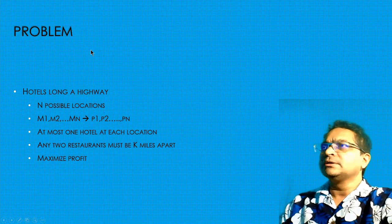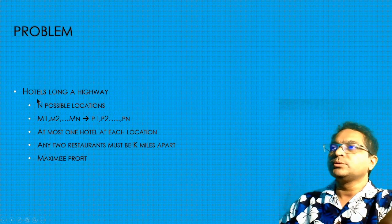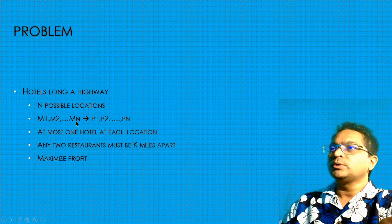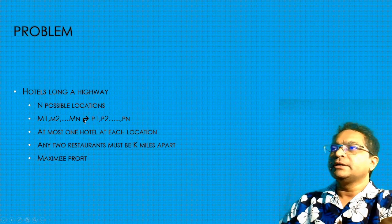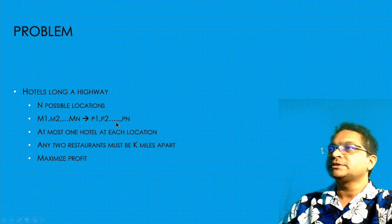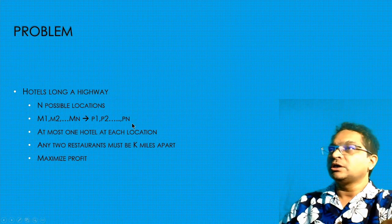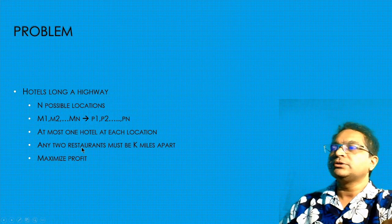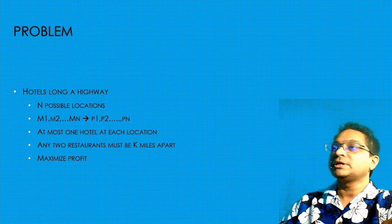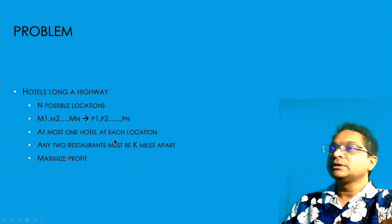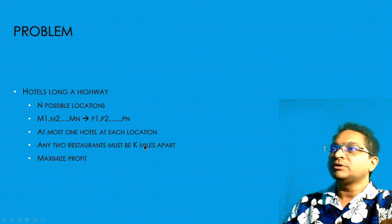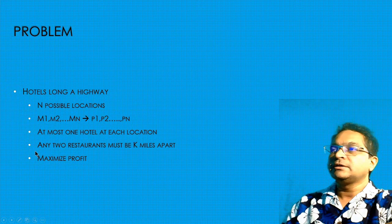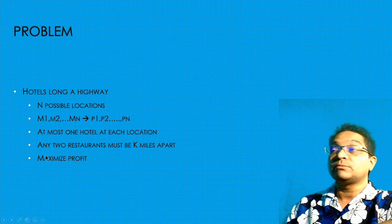In the problem description, we want to have hotels along a highway. There's N possible locations M1, M2, and MN. If you put a hotel at any given location, the profits coming in are P1, P2, and PN. But there is a gotcha: at most you can only have one hotel in each location, and any two hotels must be at least K miles apart. So there is a conditional requirement - it's not just a penalty like the previous problem, it's feasibility in this case.